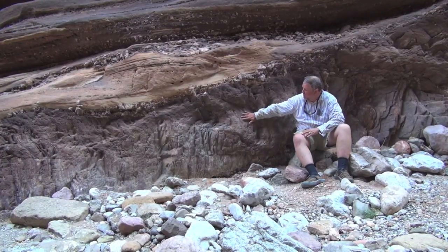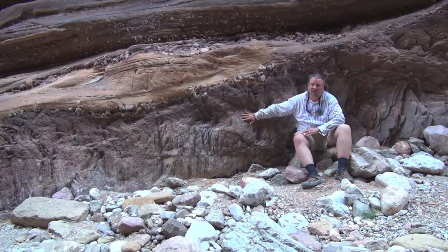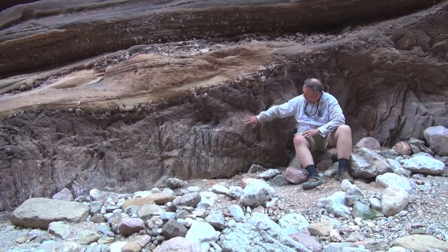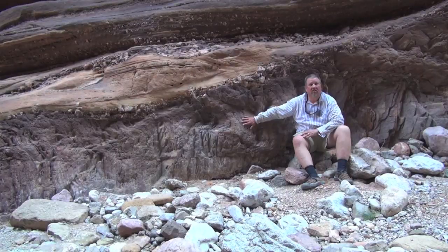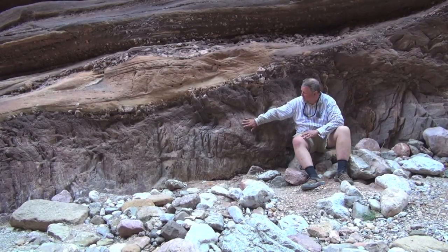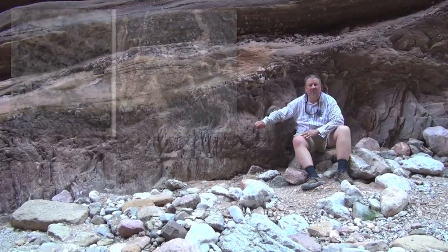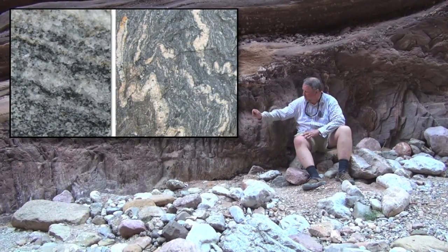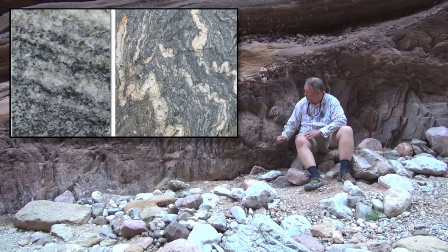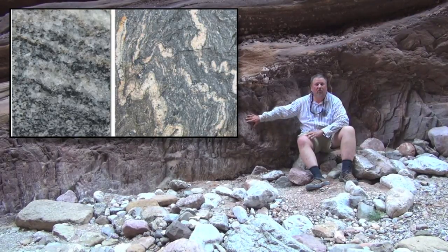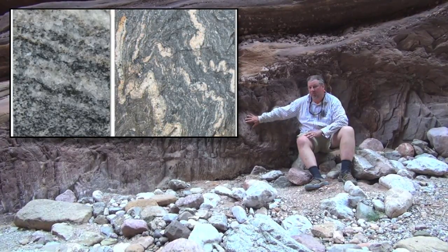We know that this is a metamorphic rock because it has certain characteristics that are very typical of metamorphic rocks. For one thing, it's composed completely of mineral crystals. It's hard to tell looking at the outcrop here, but if you were to break off a piece and look at it with a magnifying lens, or slice a thin section and look at it under a microscope, you would see that the entire rock is composed of interlocking crystals of different minerals.